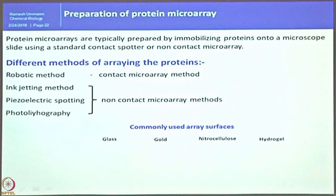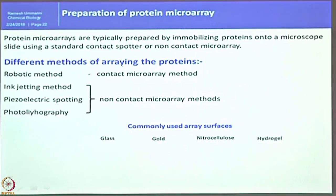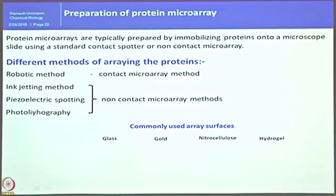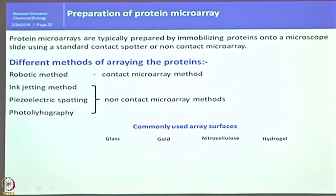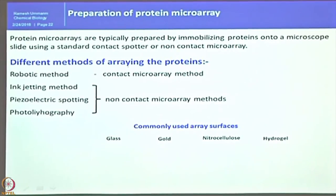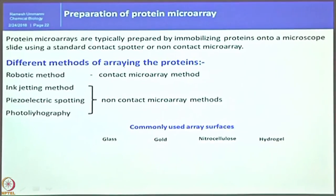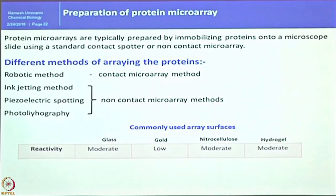Next is the preparation of protein microarrays. Protein microarrays are typically prepared by immobilizing proteins onto a microscope slide — a glass slide with nitrocellulose membrane — using a standard contact spotter or non-contact spotters. The contact microarray method uses a needle that touches the membrane and disperses a small, concentrated spot. Non-contact methods include inkjet, piezoelectric spotting, and photolithography. The inkjet method sprays the sample near the glass slide, creating wider spots that accommodate fewer samples per slide.